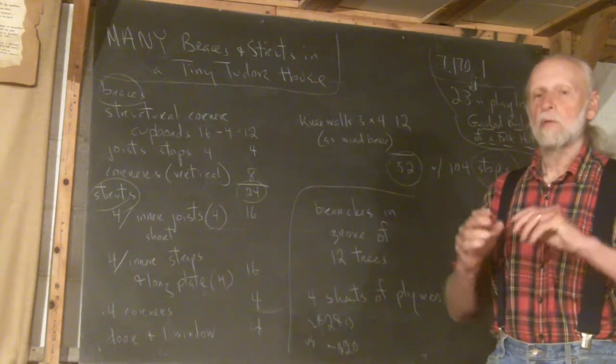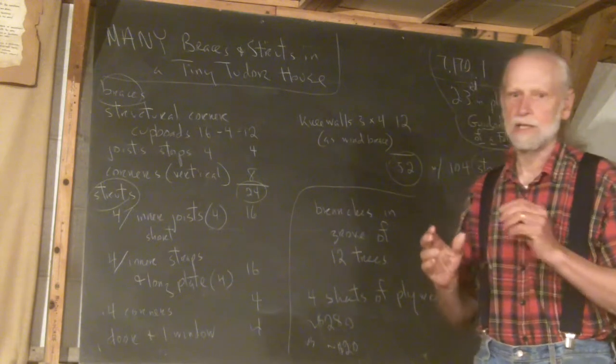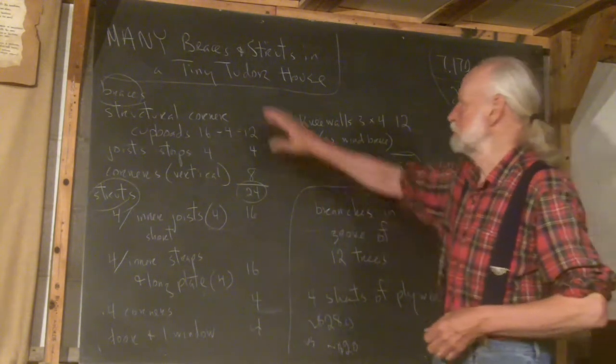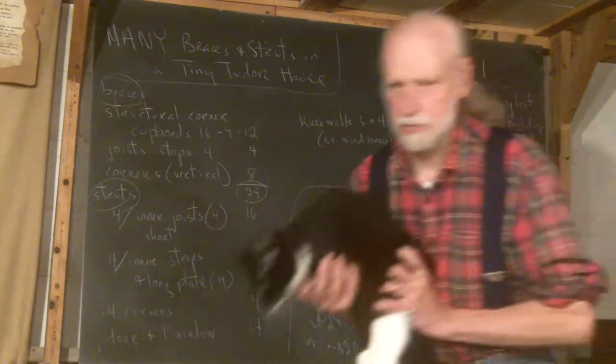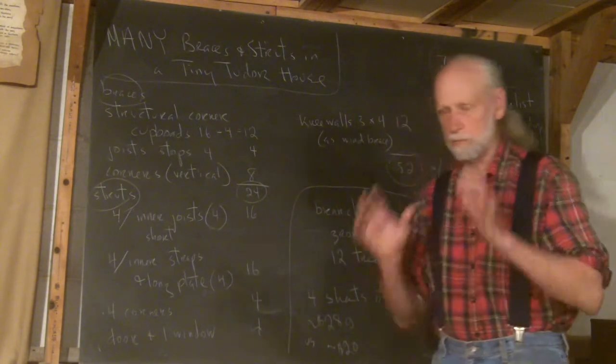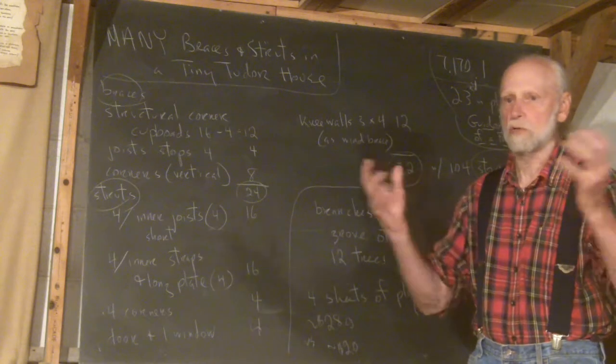Hello, welcome to Frank's School. There will be many braces and struts in this tiny Tudor house. I'm using the word Tudor because these are going to show on the outside. The building will be white unless you've decided to make it something else. Basically it'll be white and all of these struts and braces are going to show, they're going to be visible.